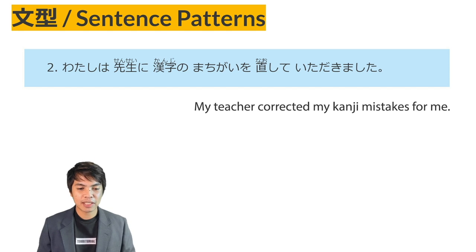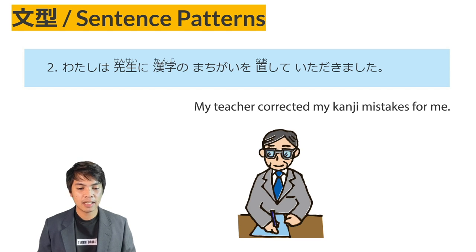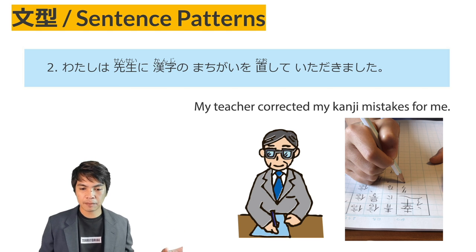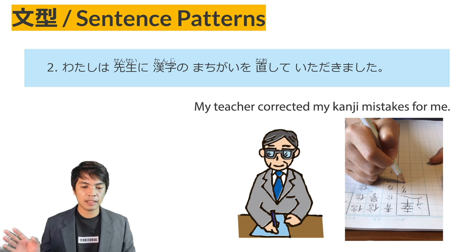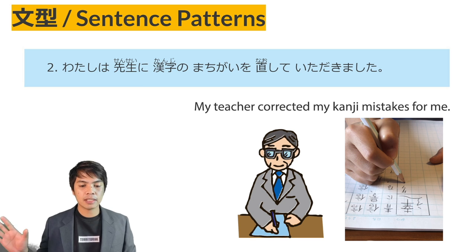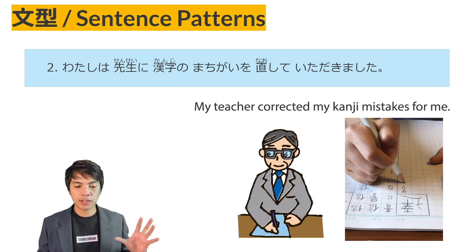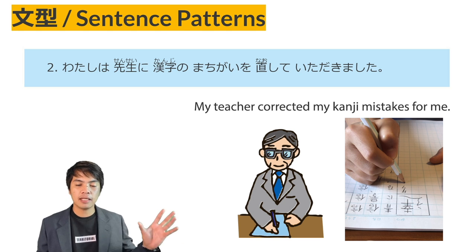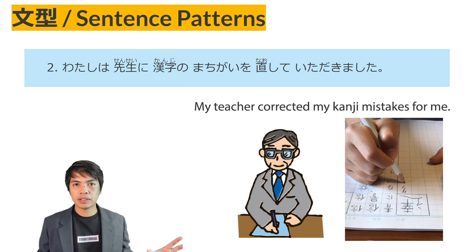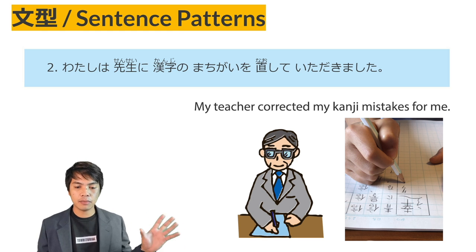Sentence Pattern No. 2: Watashi wa sensei ni kanji no machigai o naoshite itadakimashita. This is the same as the verb te moraimashita pattern, but moraimashita becomes itadakimashita. This is used when the speaker receives a favor from someone. The verb te itadakimashita is more polite compared to verb te moraimashita.